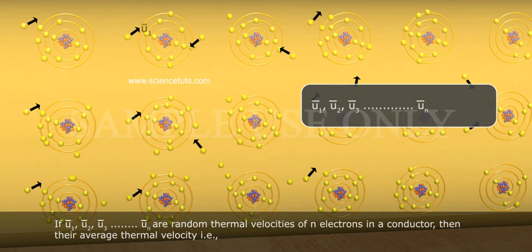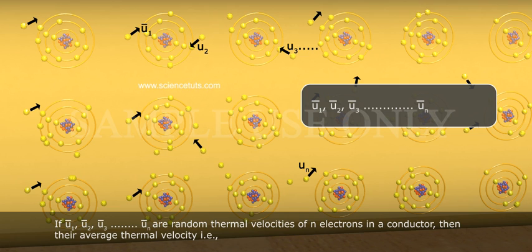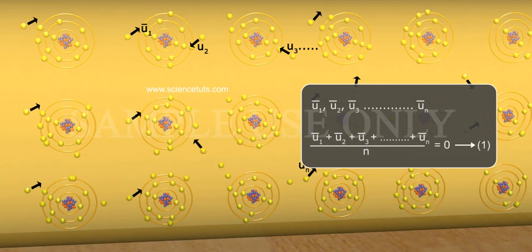If U1, U2, U3, ... Un are the random thermal velocities of n electrons in a conductor, then their average thermal velocity, that is, (U1 + U2 + U3 + ... + Un) / n = 0. This is Equation 1.